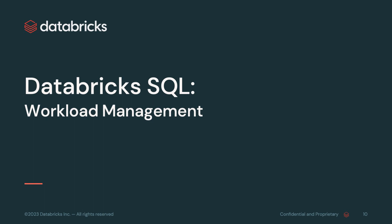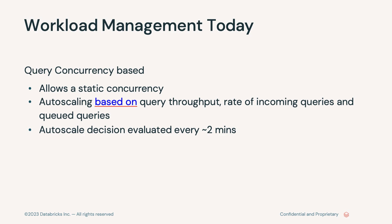Let's talk about workload management as it exists today. Largely, the workload management in Databricks SQL has been concurrency-based — fairly simple. We allow a static concurrency level. Auto-scaling is based on query throughput and takes into consideration the rate of incoming queries and queued queries. However, the auto-scaling decision is evaluated every two minutes. If your traffic drops to zero while you're running three clusters, it can take up to two minutes to bring them all down — and you're paying for those clusters during that time with no queries running.